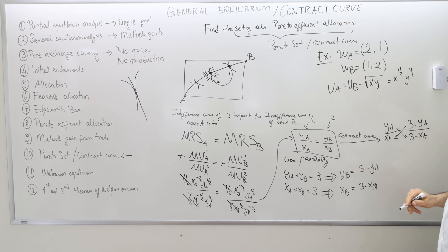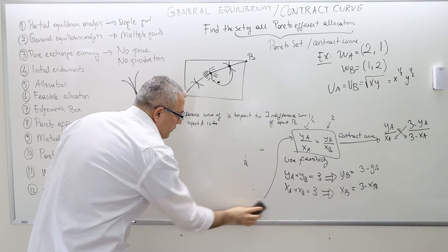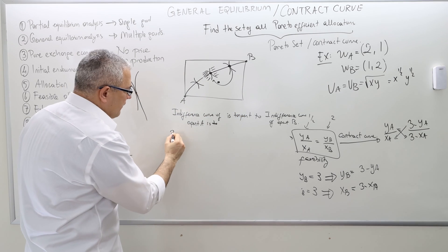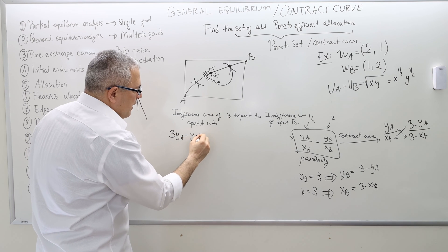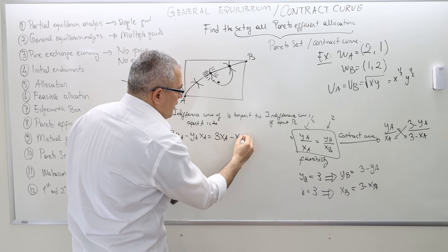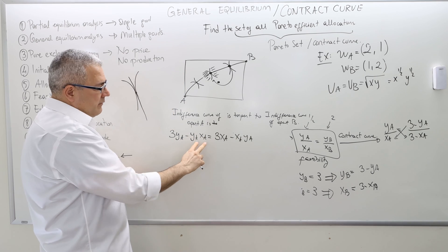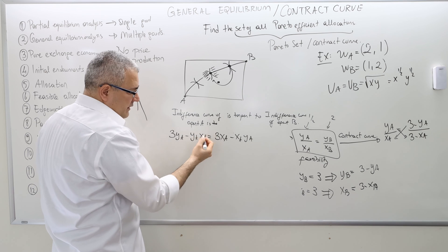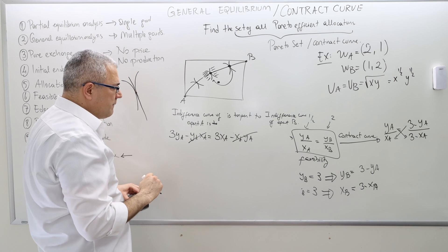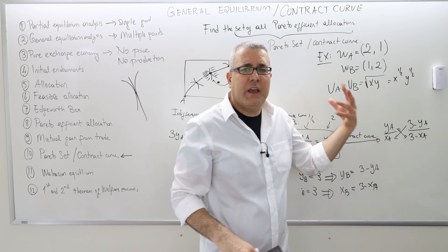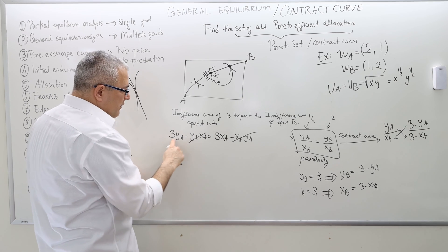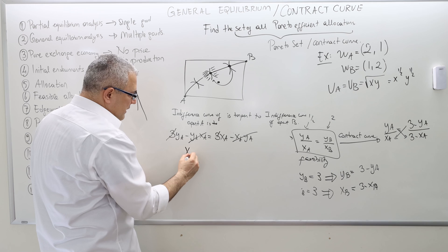Do the cross product: 3YA − YA·XA = 3XA − XA·YA. The XA·YA terms cancel out from both sides, and the 3s simplify, giving us XA = YA. That's the contract curve expressed in terms of agent A's consumption.